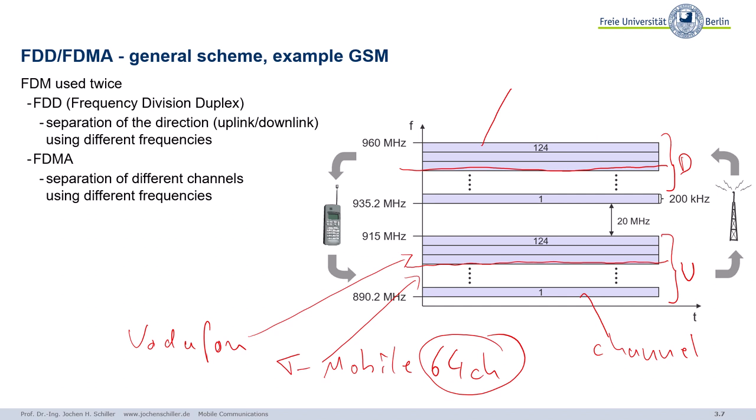Inside each of the channels we can additionally apply time division multiplexing — so these schemes are not exclusive, you can combine them. This simple example already shows FDM used twice: as FDD to separate uplink and downlink, and as FDMA to separate operators and assign different channels to different cells in the network.